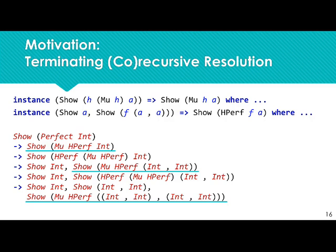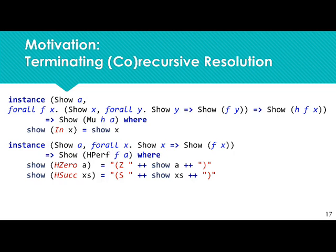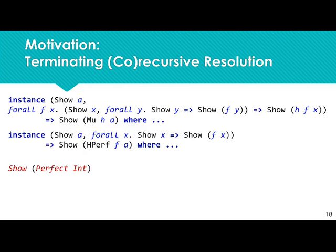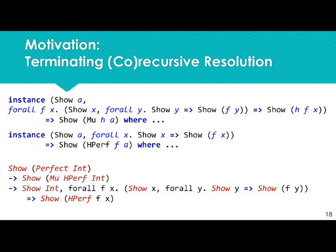Using quantified class constraints, we can represent the instances in a slightly more complex form. When we take a look at the same example — we inline the definition for perfect, match against the head of our mu instance, show of integers is immediately dischargeable, and the second part is exactly the formula from the second instance declaration. So we again skip the recursive step, thus enabling terminating resolution.